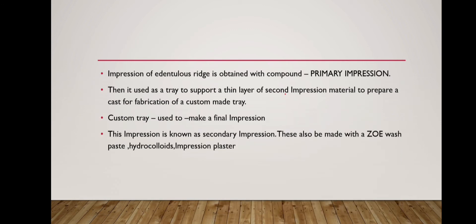Impressions of edentulous ridges are obtained with compound. Edentulous means the absence of teeth. It is used as a primary impression. It then uses a tray to support a thin layer of secondary impression material to prepare a cast for fabrication of a custom tray. The custom tray is used to make a final impression, known as a secondary impression. These can also be made with zinc oxide eugenol wash paste, hydrocolloid impression material, or plaster.